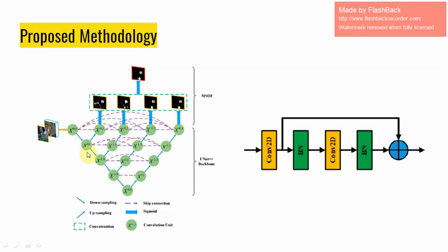For example, take the X04 node, where only one skip connection is applied from X00 in the UNet architecture. While in UNet++, this particular node receives skip connections from all previous convolutional units at the same level — namely X00, X01, X02, and X03. In this way, the semantic levels of encoder feature maps are closer to those in the corresponding decoder part, which facilitates the optimization of the network.